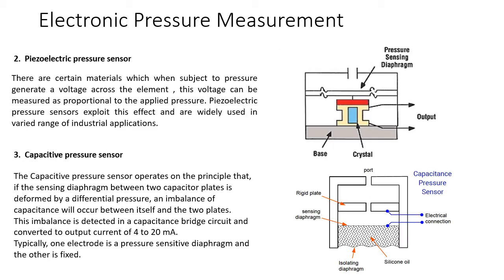The piezoelectric pressure sensor exploits the property of certain materials that generate a voltage when subjected to pressure. This voltage is proportional to the applied pressure and can be measured accordingly. In a typical arrangement, a diaphragm applies pressure to a piezoelectric material mounted on a base connected to an electrical circuit, and the corresponding voltage is generated and measured.